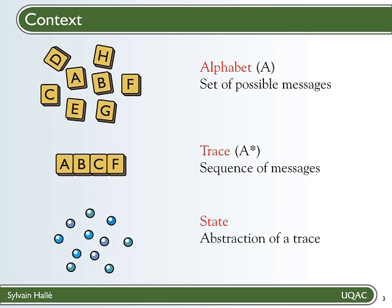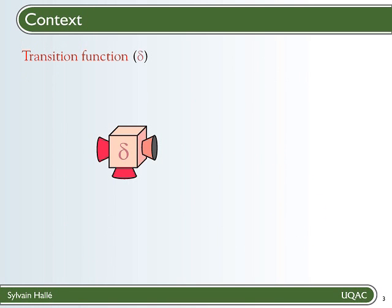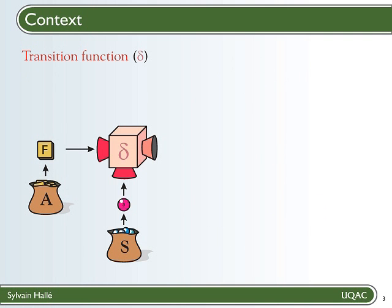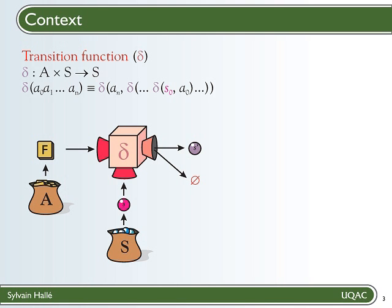So in a way, we can say that a state is an abstraction of a trace according to some protocol. If you have such a protocol, you can define a transition function, which is a function that, given any message from the alphabet and any state from the set of possible states, will return either the new state of the protocol resulting from the sending or reception of the message, or some empty symbol that expresses the fact that in the current state of the protocol, sending or receiving that message is not defined or not allowed.